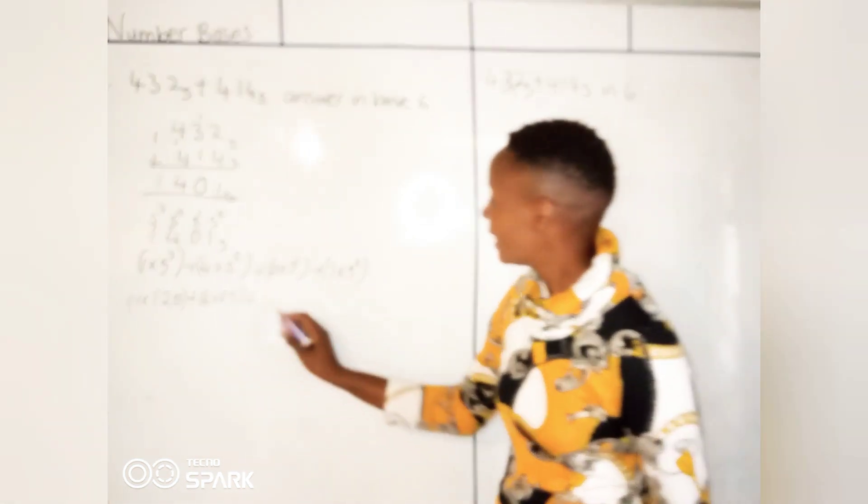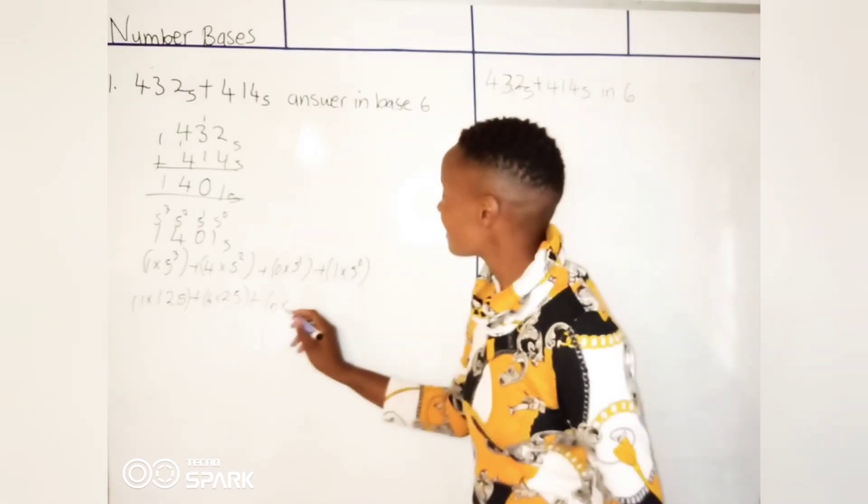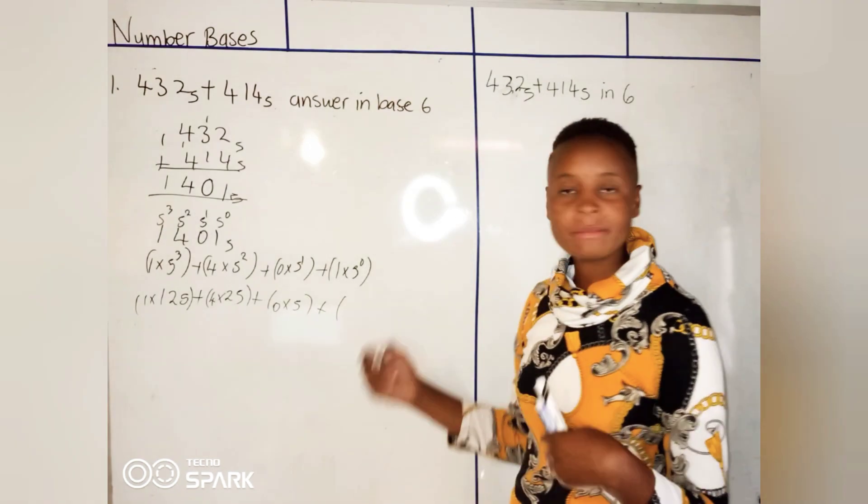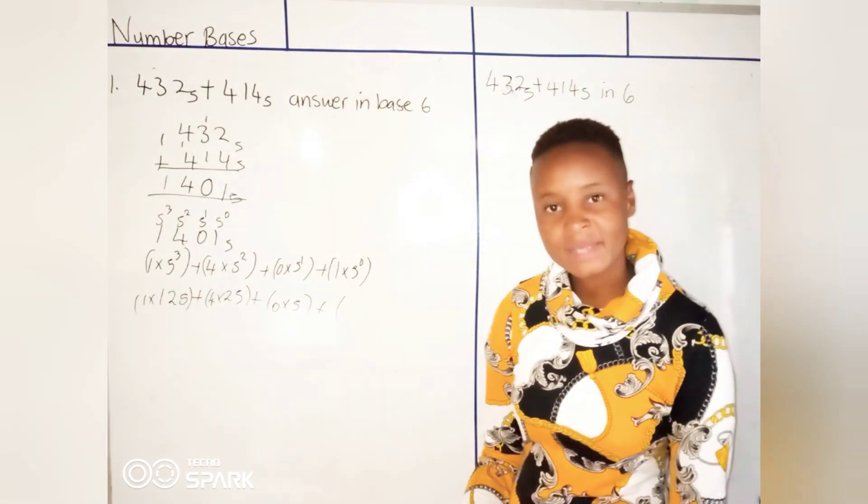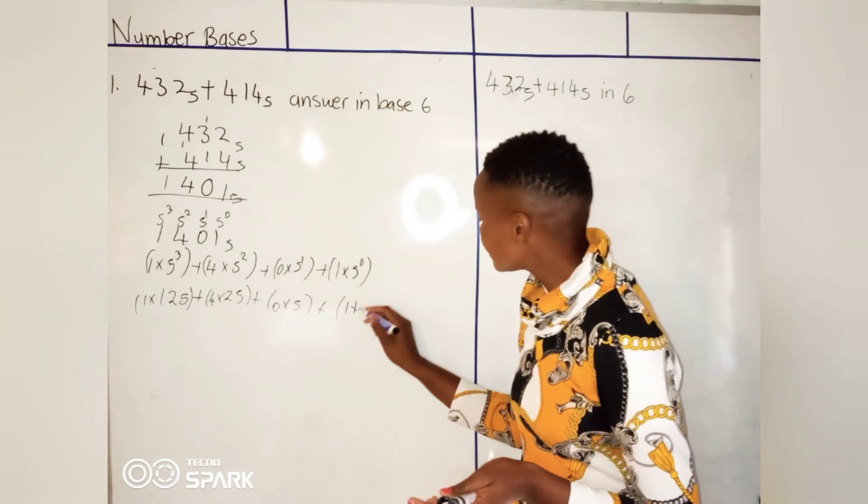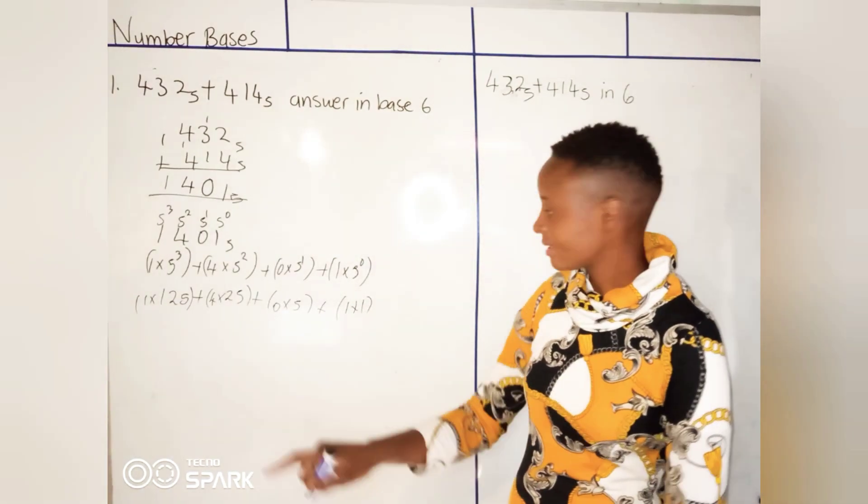Plus 0 times 5 to the power 1. I'll write it, 0 times 5. 5 to the power 1 is 5. Plus 1 times 5 to the power 0. 5 to the power 0, any number to the power 0 is 1, right? So 1 times 1, I'll just write it as 1 times 1.